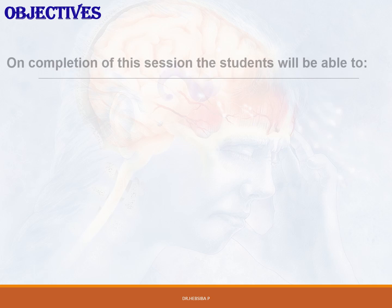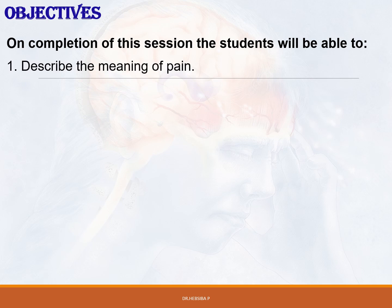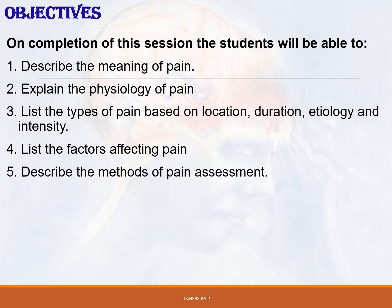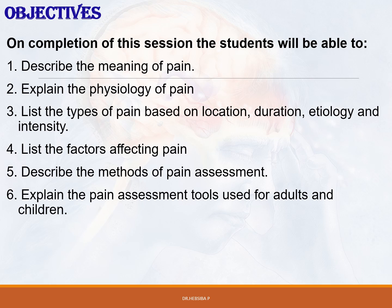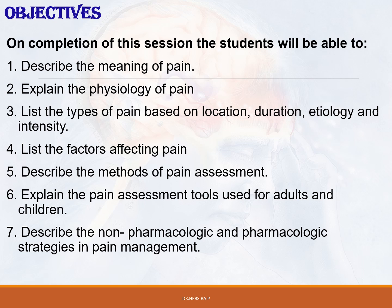The main objectives of this course include: on completion of this section, the students will be able to describe the meaning of pain, explain the physiology of pain, list the types of pain based on location, duration, physiology and intensity, list the factors which affect pain, describe the methods of pain assessment, explain the pain assessment tools used for adults and children, and describe the non-pharmacologic and pharmacologic strategies in pain management.